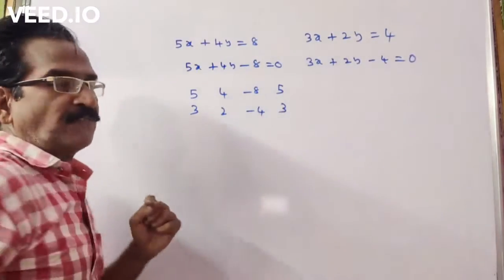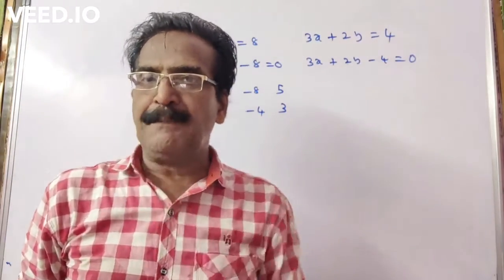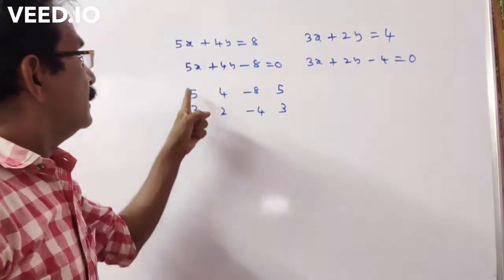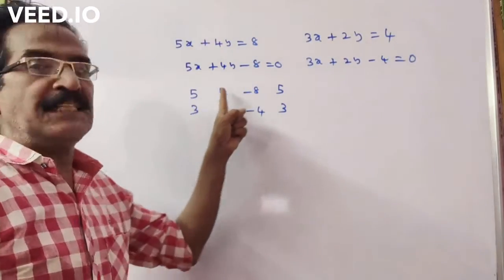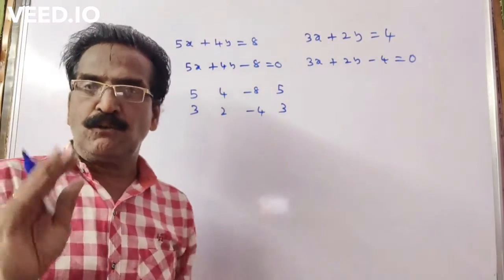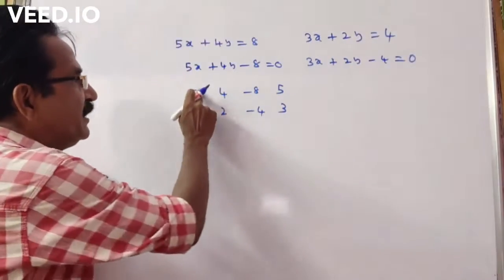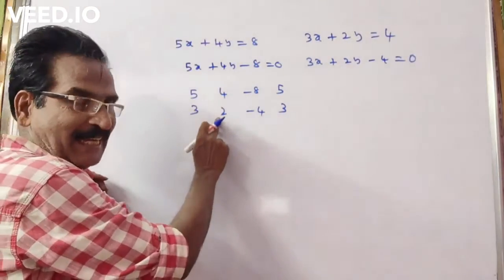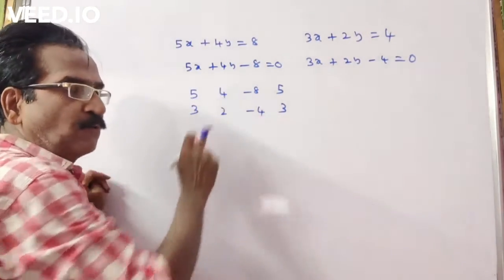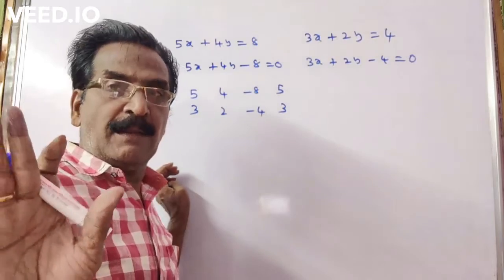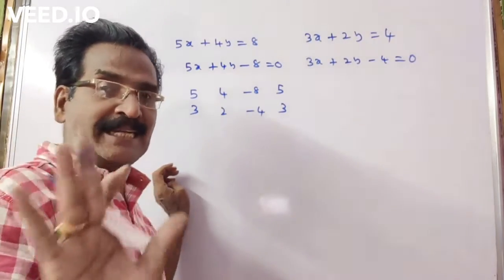After writing the coefficients, first you have to check whether this cross product minus this cross product is positive or negative. 5 into 2 is 10, minus 3 into 4 is 12. 10 minus 12 equals minus 2. That is negative.